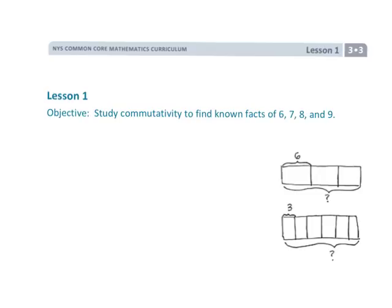All right, this is Grade 3 Module 3 Lesson 1. We're going to be talking about multiplication for the next several videos. In this case, we're going to be specifically talking about the commutative property with multiplication.